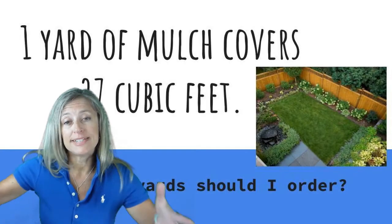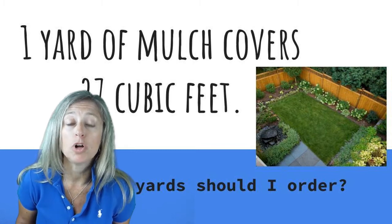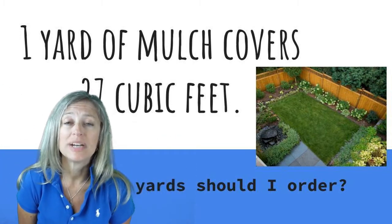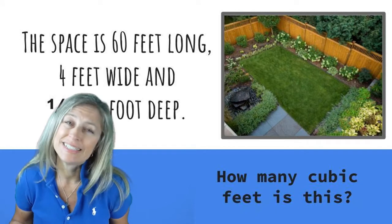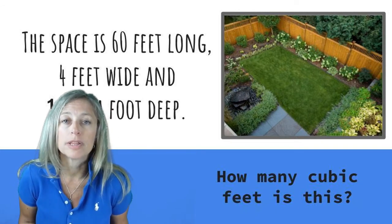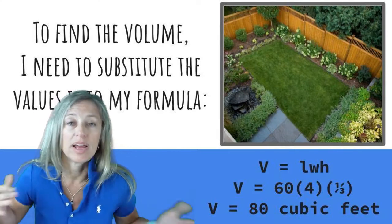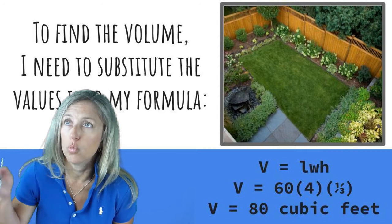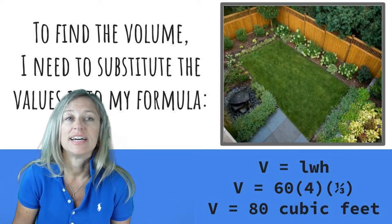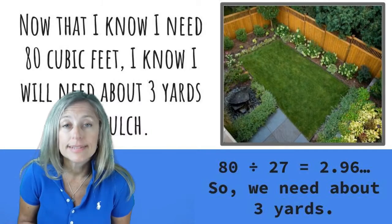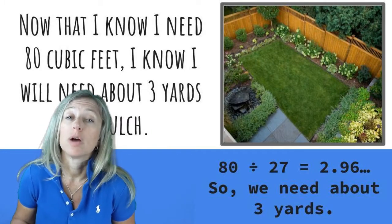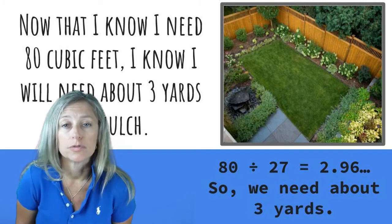Here's an example: I did some landscaping over the summer and had a big empty space that I needed to fill with mulch. Mulch comes in what they call a yard, and it covers 27 cubic feet — that's volume. I had to find the volume of my space so I knew exactly how much mulch I needed. I substituted numbers into the volume formula — I found the length, the width, and the depth, or height, of the mulch I needed. When I multiplied all those numbers together I got 80, and since one yard covers 27 cubic feet, I divided 80 by 27 and found that I needed almost three yards. This is consumer math — this is how you know you've ordered the right amount of stuff without relying on someone else to tell you.